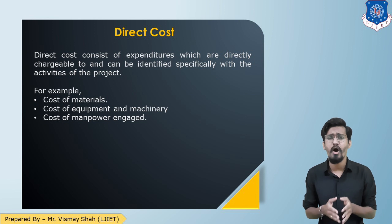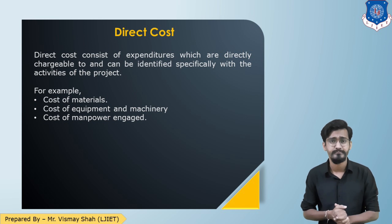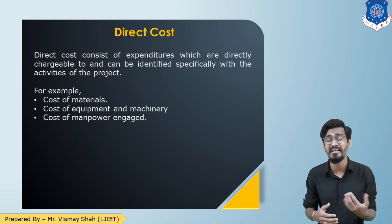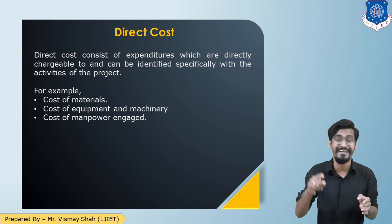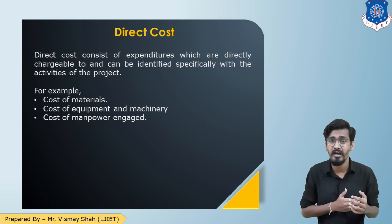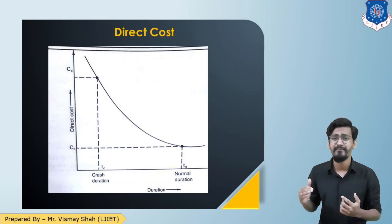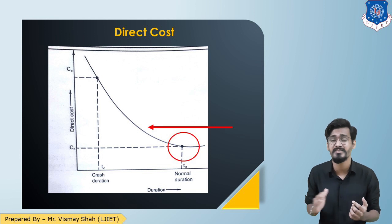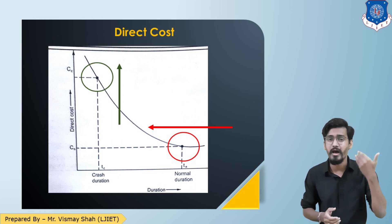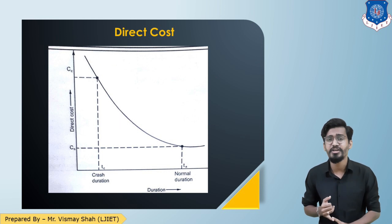Normally a project has an optimum duration in which it can be completed with optimal usage of resources, and that is known as the normal duration of the project. As we deploy additional resources, the direct cost will increase. Looking at the graph, as we increase resources and reduce the time, the graph goes backward and upward. This indicates four terminologies: normal duration, crash duration, normal cost, and crash cost.